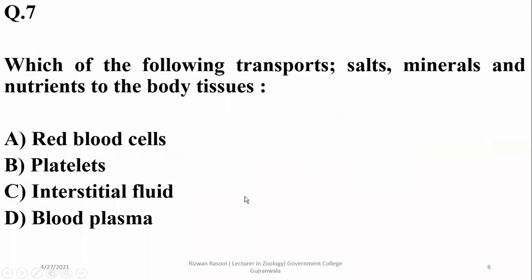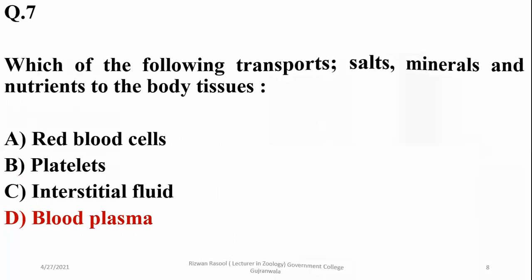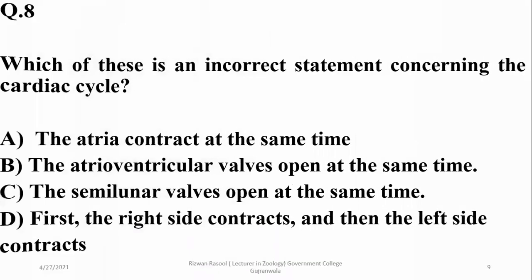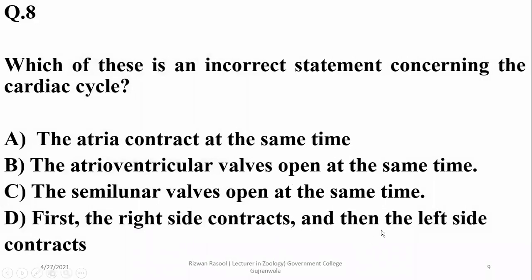Question number seven: which of the following transports salts, minerals, and nutrients to the body tissues? It is blood plasma, which is responsible for transporting various salts, minerals, and absorbed food from the intestine to the body tissues. Question number eight: which of these is an incorrect statement concerning the cardiac cycle?